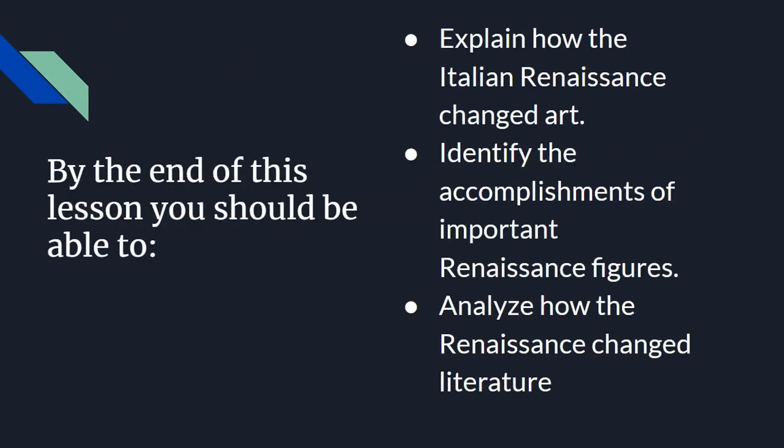That's how art, culture, and literature developed throughout the Italian Renaissance. Hopefully you can answer these objective questions. Next time, we're going to dive into how the Renaissance spread across Northern Europe and how this led to a political, economic, and social revolution for a whole bunch of other countries. Hopefully you got these main points out of this — thank you for listening, we'll see you next time.